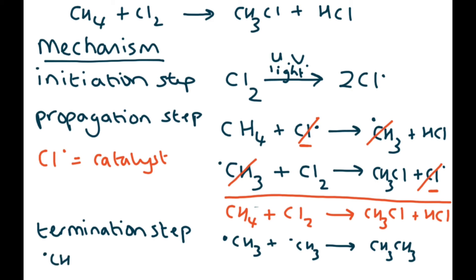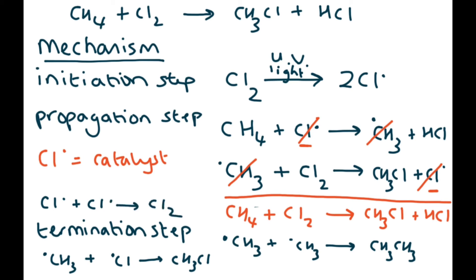Or it could be a CH₃ radical reacting with a chlorine radical, which makes CH₃Cl. The third termination step is two chlorine radicals reacting with each other to make a Cl₂ molecule. A termination step is when two radicals react together to give a molecule.